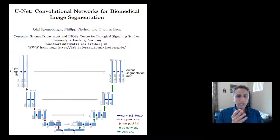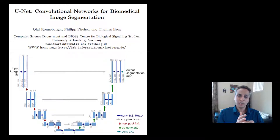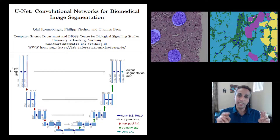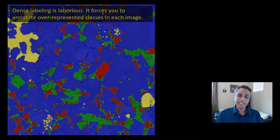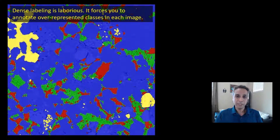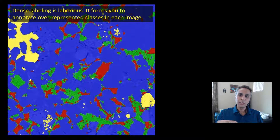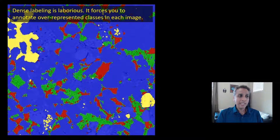Whether it is UNet or any other deep learning approach, the core concept is you provide a pair of image and corresponding ground truth. The ground truth is provided as a fully segmented image to the model — referred to as densely labeled images by the community — meaning every pixel must belong to a specific class, so you're again doing a manual segmentation. This works great, but it is very laborious.